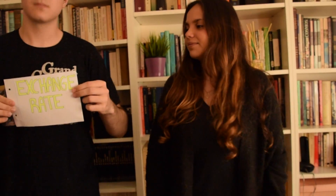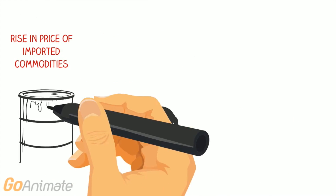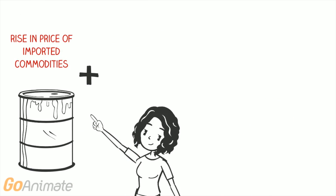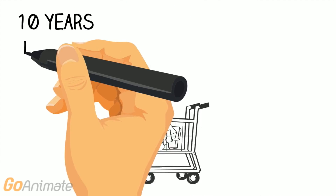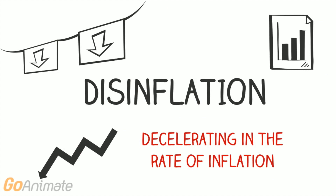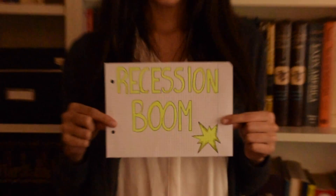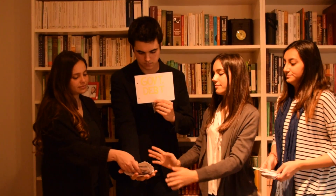An interest rate is the amount charged, expressed as a percentage of principal, by a lender to a borrower for the use of assets. Through this general formula, S0 stands for the amount of money that was lended, R is the percentage of interest you have to pay, N is the seasonality of payments — meaning the number of payments every X months or even once a year — and T is the number of years you have to pay interest.